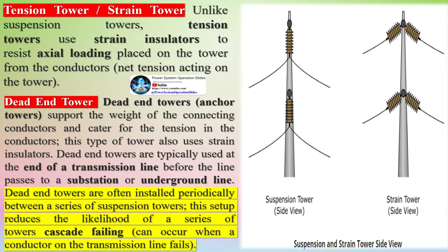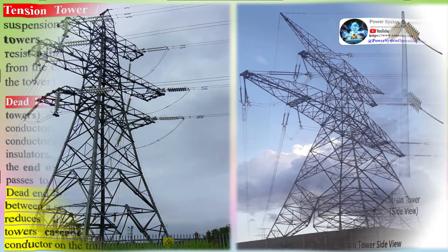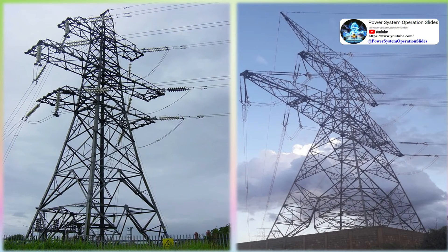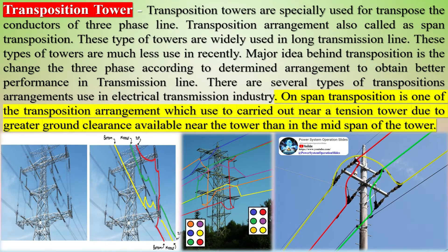Transposition towers are specially used for transposing the conductors of a three-phase line. This arrangement is also called span transposition. These types of towers are widely used in long transmission lines, though they are much less used recently.